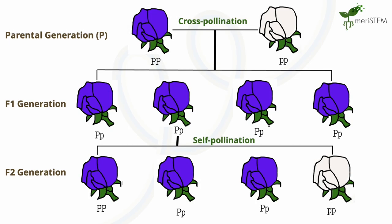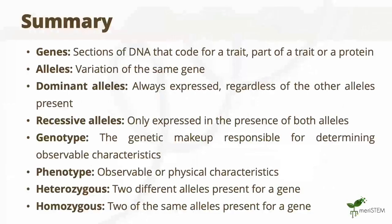Based on what we just covered, if we look at Mendel's flowering pea plant example again, we can use these principles to add genotypes to each of these flowers. In this video, we covered various concepts within genes and alleles. Here's a summary of the different terms that we came across today.